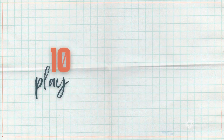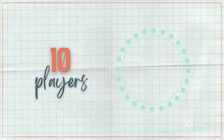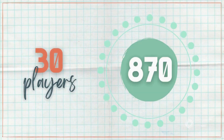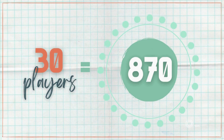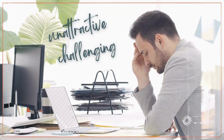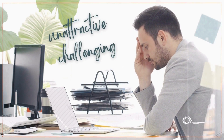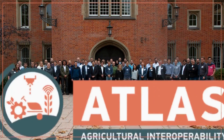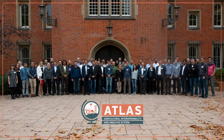For 10 players in the market, it's already 90 connections to maintain. For 30 players, already 870. It becomes more and more unattractive and challenging for you to start and maintain interfaces — and we experience the same.